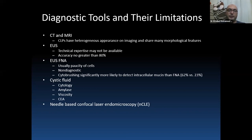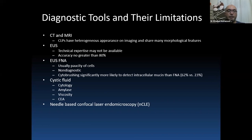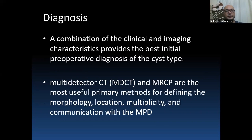False negative cytology may be high, up to 60%, and cytobrushing is significantly more likely to detect IPMN. Cystic fluid analysis for cytology, tumor markers like carcinoembryonic antigen (CEA), amylase, and newer modalities like confocal endomicroscopy exist, though confocal endomicroscopy is not daily practice. The diagnosis of pancreatic cystic lesion requires a combination of clinical and imaging characteristics to provide the best initial preoperative diagnosis of cyst type.